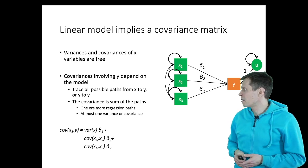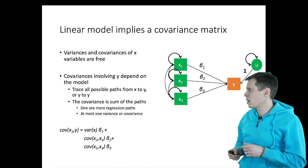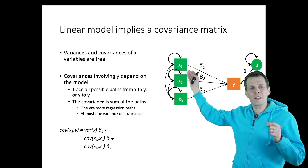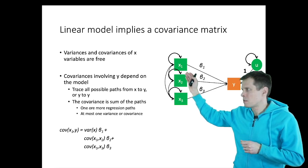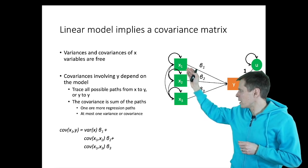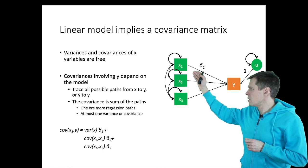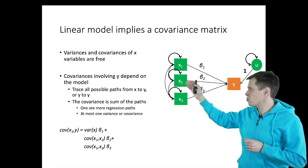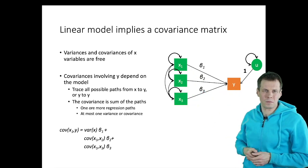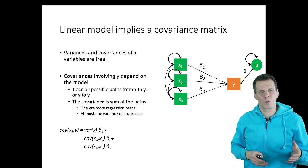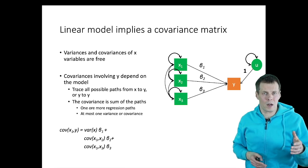I'll show you the result and how we come up with it. If we want to calculate the covariance between x and y, we start from x and we always have to go back until we hit a two-headed arrow, and then we trace down. So we trace back, take the two-headed arrow immediately, and then trace down to y. Similarly, we can go from x1, two-headed arrow to x2, or back from x1, two-headed arrow to x3, and then one step down to y. We always trace backwards to the closest two-headed arrow, or we can start with a two-headed arrow and then trace forward.